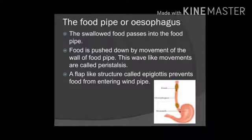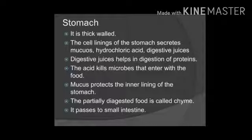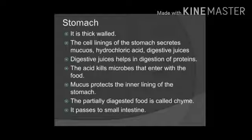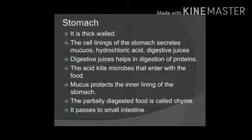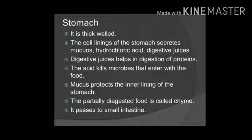Next is the stomach. The stomach has thick walls, and its cell linings secrete three things: mucus, hydrochloric acid, and digestive juices. The stomach is located on the left side of the abdomen, and it is the widest part of the alimentary canal. The digestive juices secreted in the stomach help in digestion of proteins. Hydrochloric acid kills the microbes that enter with the food. Mucus prevents damage to the inner lining of the stomach. The partially digested food is known as chyme, which then moves to the small intestine.